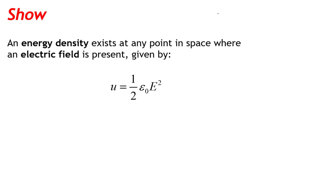An energy density exists at any point in space where an electric field is present. This is given by one-half times the permittivity of free space times the magnitude of the electric field squared. Let's see if we can show this result.